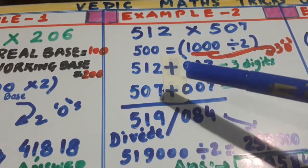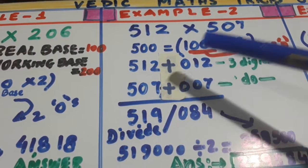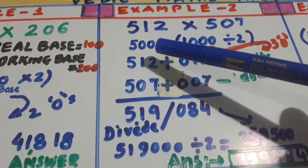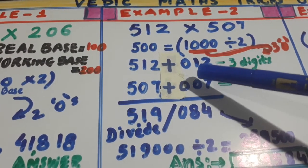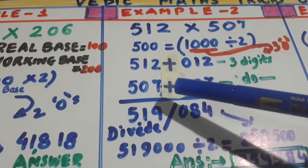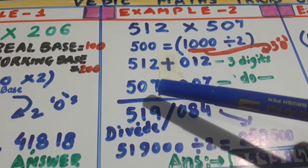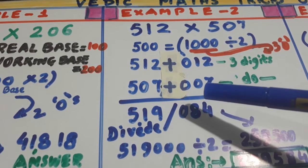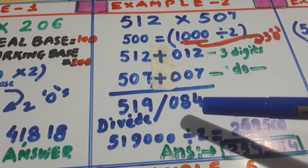So 512 is 12 more than the working base, that is 500. We have to write it in 3 digits, 012. Similarly 7 is more than 500. Right here, 007. So 12 times 07 is 84.